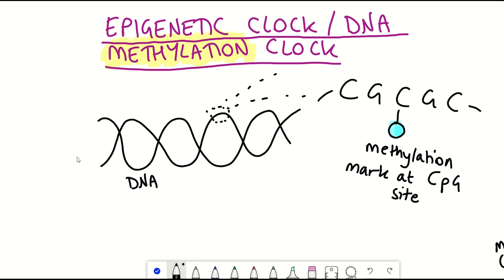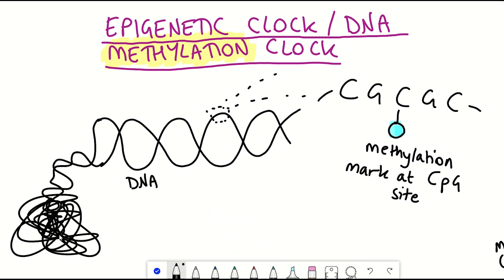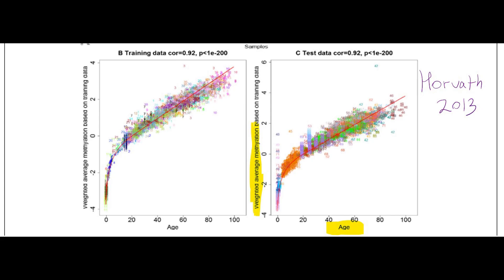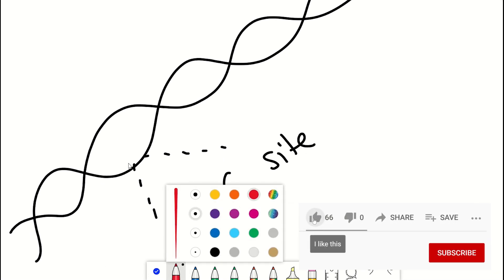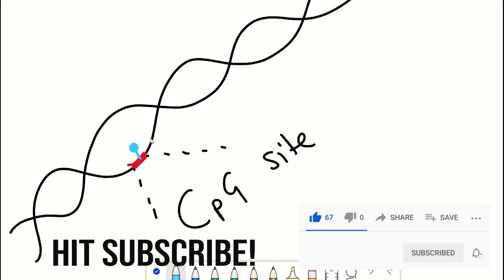By detecting the presence or absence of methylation at these sites, researchers have been able to generate epigenetic clocks of age-related DNA methylation changes that show strong associations with age. There are different ways to track these changes in methylation.